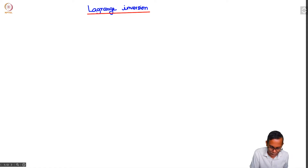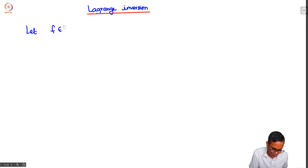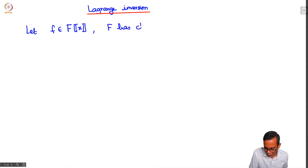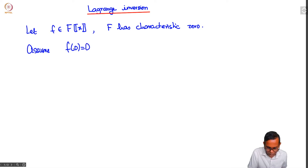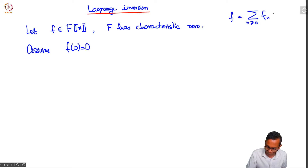What is the Lagrange inversion theorem? Suppose we have a function f of a formal power series in some field of characteristic 0 — you can take this field to be the rational numbers or complex numbers. We assume the field has characteristic 0, and let us assume that f(0) equals 0. If we write f as the summation over n greater than or equal to 0 of f_n x^n, this means that f_0 equals 0.